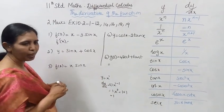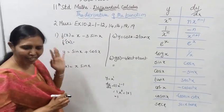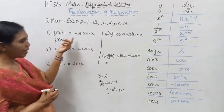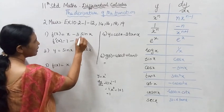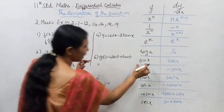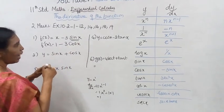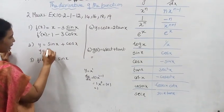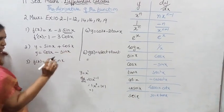Now differentiating with respect to x. The value changes. For y = sin x + cos x, differentiating: derivative of sin x is cos x, and derivative of cos x is minus sin x. So dy/dx = cos x minus sin x. This is the answer.